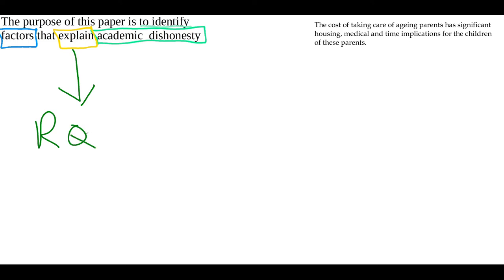From the purpose statement, you're able to extract all of your various research questions. In other words, the research questions that I ask are going to help me to identify factors that explain academic dishonesty. There are several steps involved in that — calculating the means, the correlations, doing a regression analysis — all of that is laid out and extracted from the purpose statement. So the purpose statement is like a one-sentence summary of what I will do, and then you break it down in the research questions.